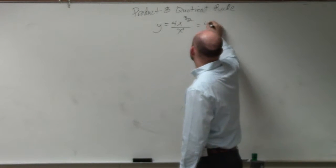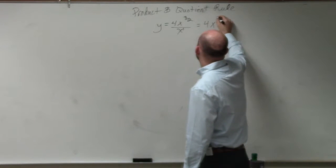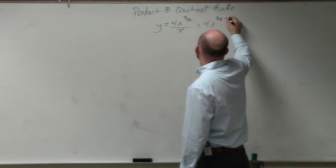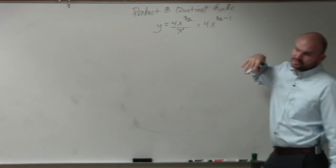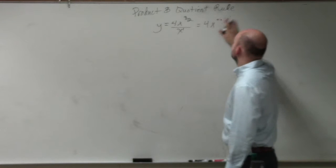So therefore, that's equal to 4 times x to the 3 halves minus 1. Because I bring the x to the, actually, let's look at it like this: